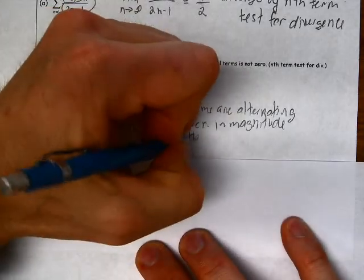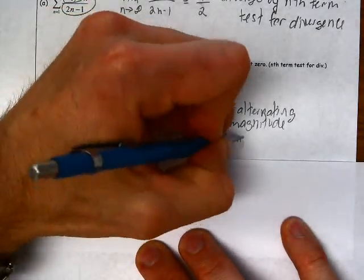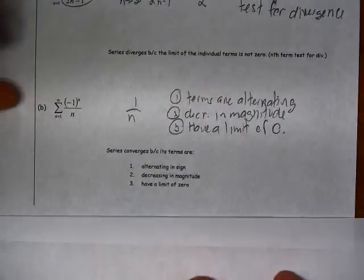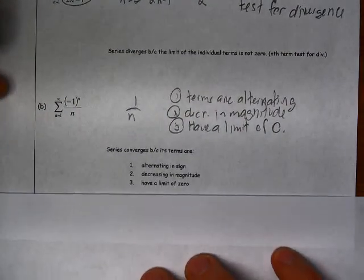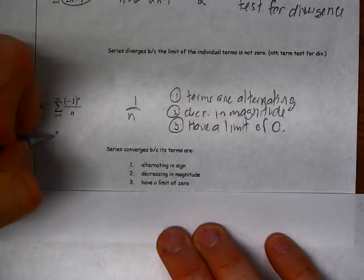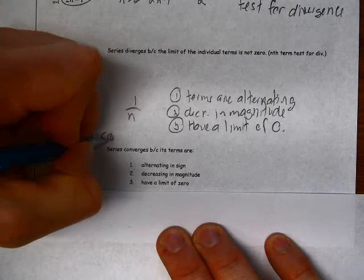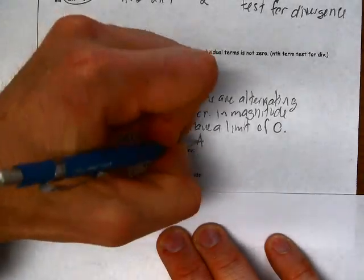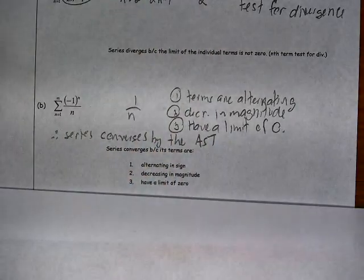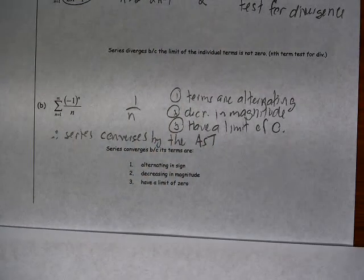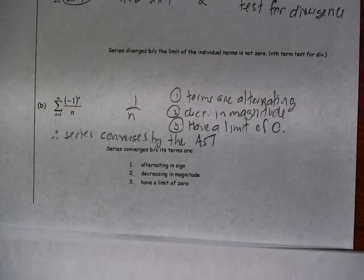And they do have a limit of 0. So since we meet these three conditions, this series converges by the alternating series test.